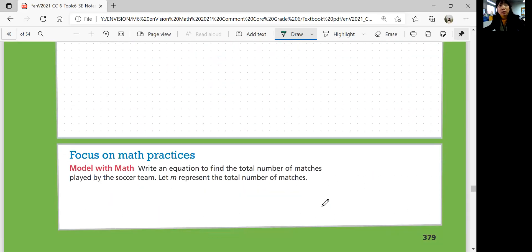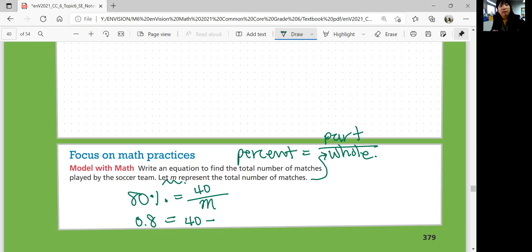Focus on math practices. Write an equation to find the total number of matches played by the soccer team. Let M represent the total number of matches. So how can you write an equation when M would be the total number of matches? Well, you know that the percent is part divided by the whole. So M is the total number of matches. That's going to be the whole. Percent is 80%. Part is 40 matches. And the whole could be the variable M. Or you can say 0.8 would be the percent, 40 divided by M.